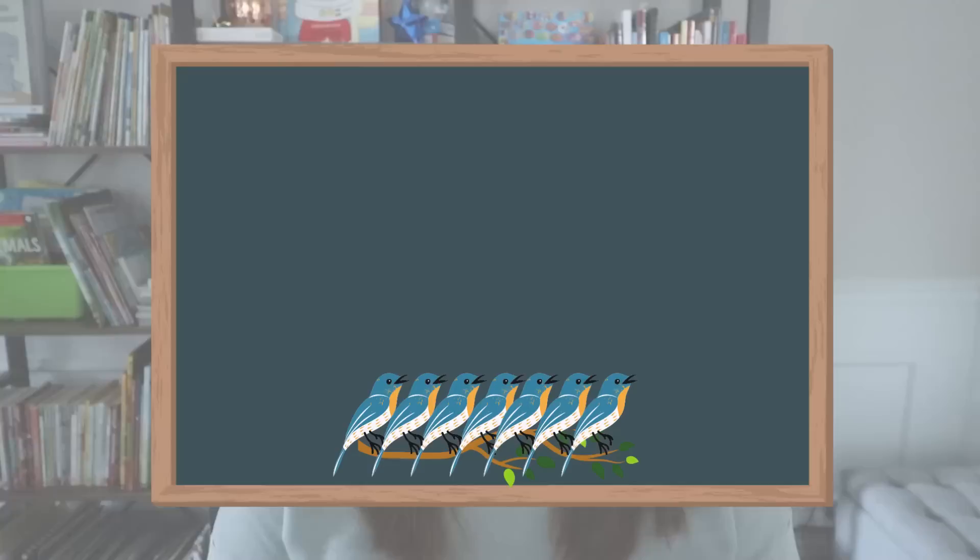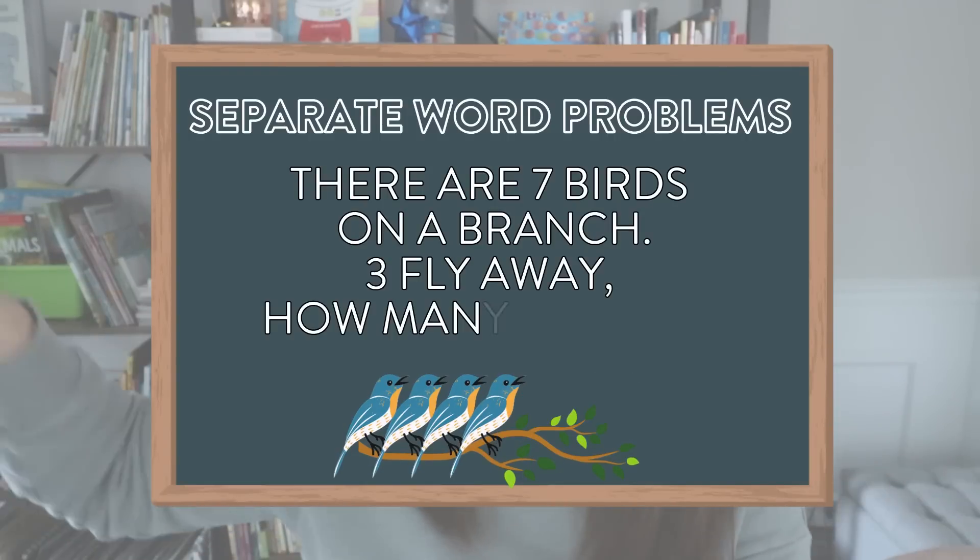Separate problems are exactly the same as join problems, except with subtraction. For example, there are seven birds on a branch, three fly away, how many are left? The unknown there is the actual answer. You could do the same types of problems with subtraction where different numbers are missing instead of just the answer. When starting out, you'll begin with answer-unknown problems for joining and separating, but ultimately you want students to recognize join and separate problems by their action verbs and understand whether things are being added to or taken away.